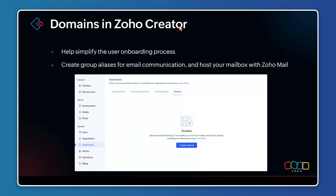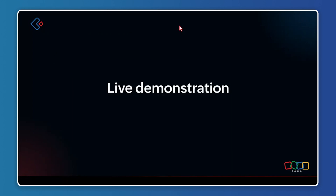In Zoho Creator, domains help make user onboarding simpler. When you already have a verified domain, you can onboard users more efficiently, group users together, and it helps with the email communication that happens when a verified domain exists. To access domains in Creator, go to the Manage section, then Governance, where you'll find an option called Domains.